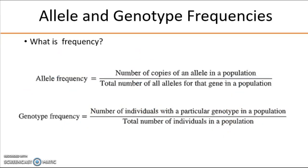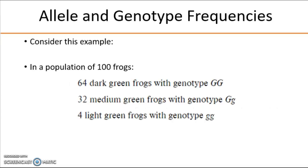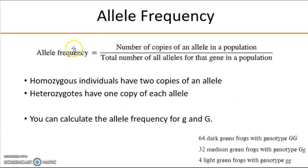Another thing that population genetics is concerned with is allele and genotype frequency — how many times does something show up? To discuss this, you need to recall Mendelian inheritance and remember what an allele and a genotype are. If we have a population of 100 forms, and this is the makeup of phenotypes and genotypes, to calculate allele frequency we need the number of copies of a single allele versus the total number of all alleles. Homozygous individuals have two copies of that allele, whereas heterozygous individuals have only one. You can calculate the allele frequency for the recessive (lowercase g) or the dominant (uppercase G).